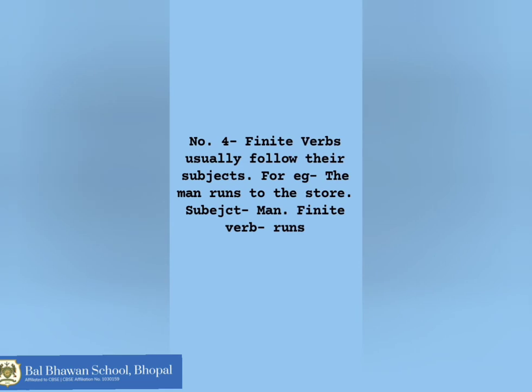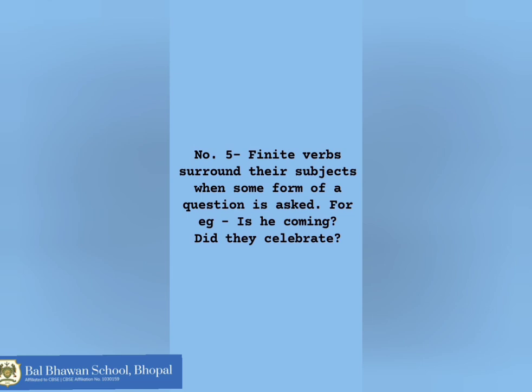Number four: finite verbs are usually followed by their subjects. Here in this sentence, the man is the subject and 'runs' is the finite verb. Number five: finite verbs surround their subject when some form of a question is asked. For example: 'Is he coming?' — here 'he' is the subject and 'coming' is the finite verb.